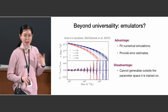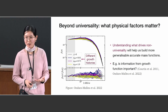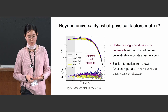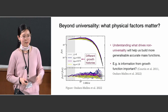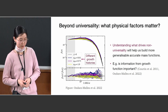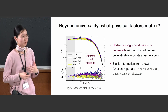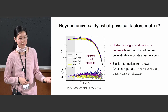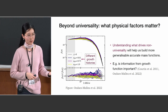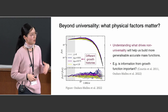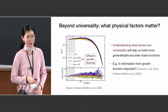Emulators also don't give us an understanding of what is determining the cosmological dependence of the halo mass function. But if we have that physical understanding, we can build a more generalizable model that is still accurate to the level required. To do that, we really need to understand what the physical factors are that we need to model the halo mass function, and what is missing from the universal picture.